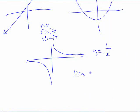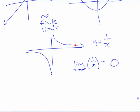So you would say the limit of 1 over x as x approaches infinity is zero, because it tends to go to zero.